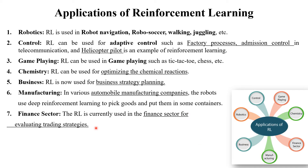These are some applications of reinforcement learning. It is generally used in robotics for robot navigation, robot successor, walking, and juggling. It is also used in controlling factory processes, administration control, and for telecommunication purposes — for example, when you call a person, telecommunication can take decisions across each router. Other applications include online games, optimization of chemical reactions in the chemistry industry, business strategy planning, manufacturing and automobile companies, deep reinforcement learning in robots, and the finance sector — because decision-making is involved in every field.